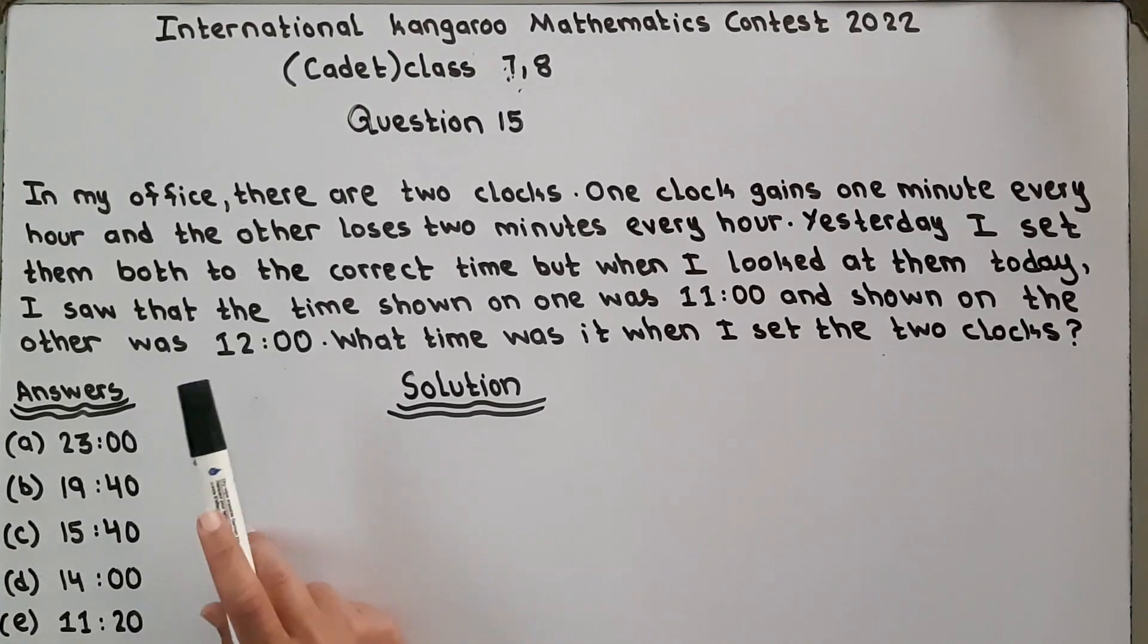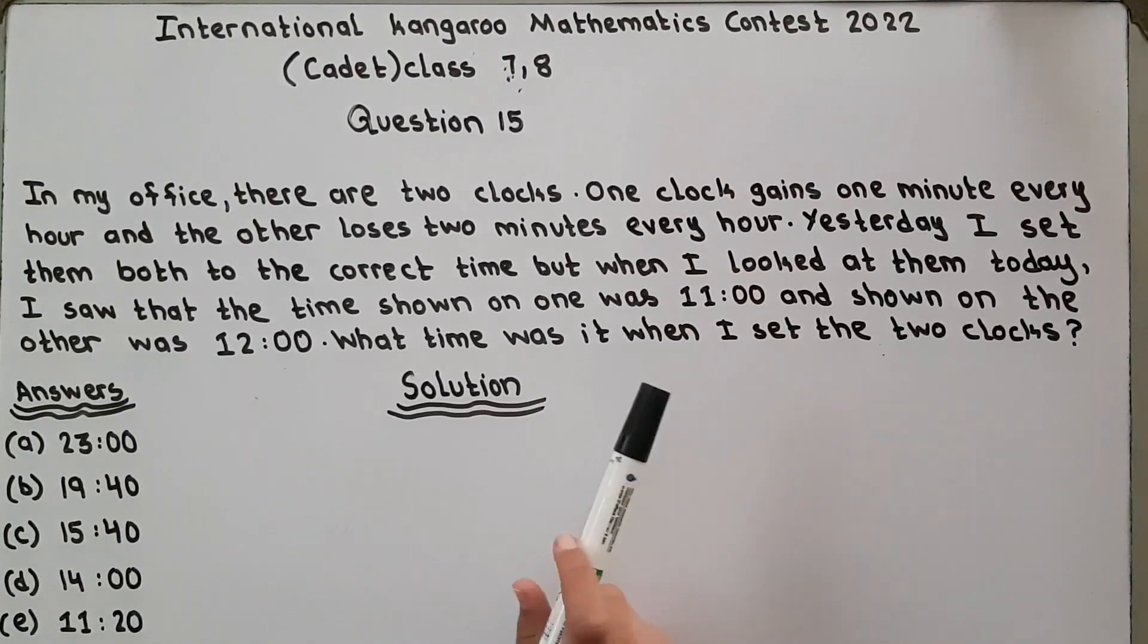So there are two clocks in the office. One clock gains one minute every hour - for example, after two hours a normal clock will show 2:00, but this clock will show 2:02, meaning it gains one minute extra every hour.